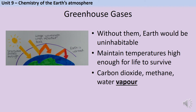For AQA GCSE chemistry or combined science, there are three greenhouse gases you need to know the name of: carbon dioxide, methane, and water vapour. It's really crucial that you include the word vapour - if you just say water, you're not going to get any marks on the exam.